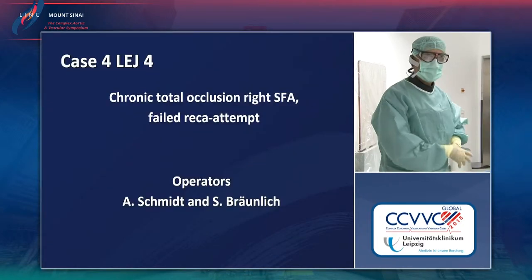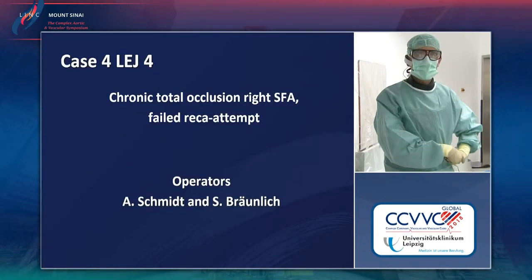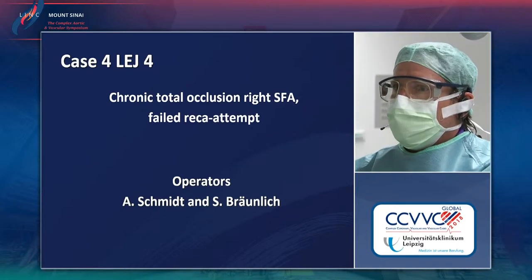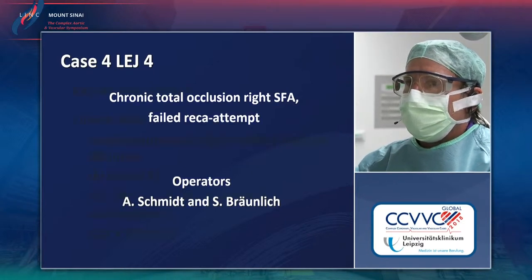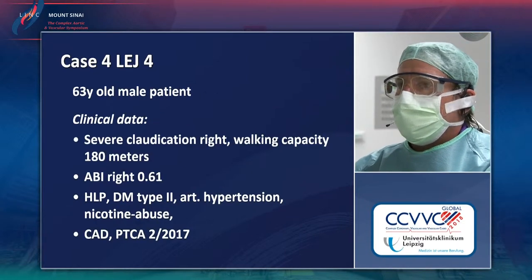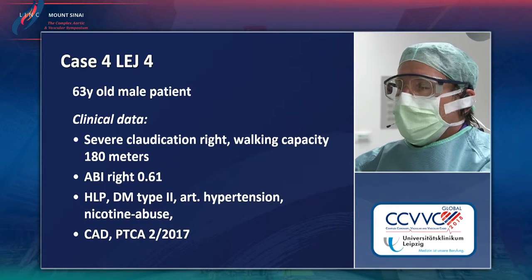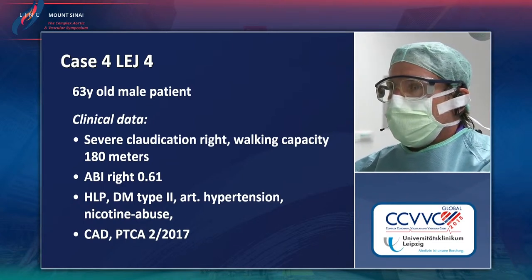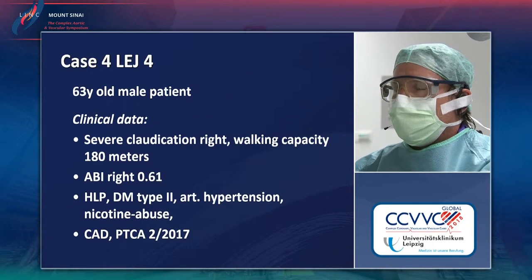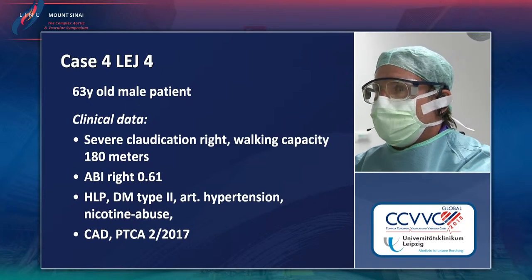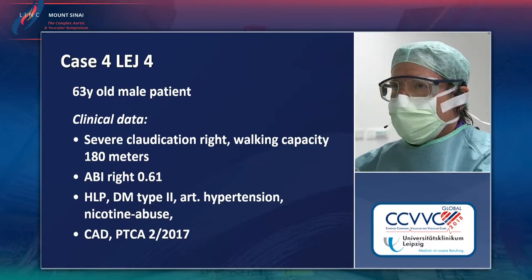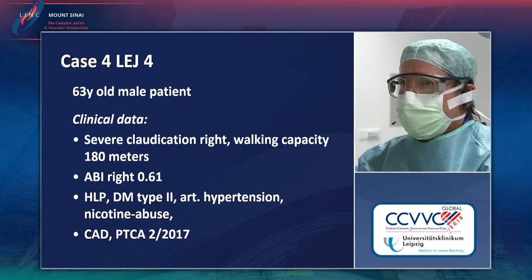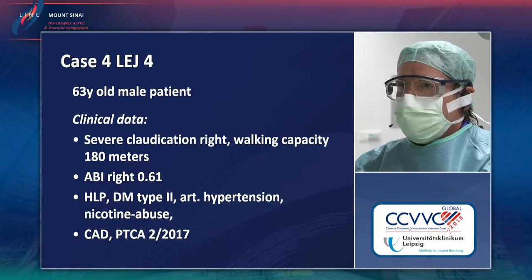Sven introduces the case: a 63-year-old gentleman with a CTO of the right SFA. He presents with severe claudication on the right side, with a maximum walking capacity of 180 meters. ABI is 0.61. He has several risk factors and has already undergone coronary intervention.